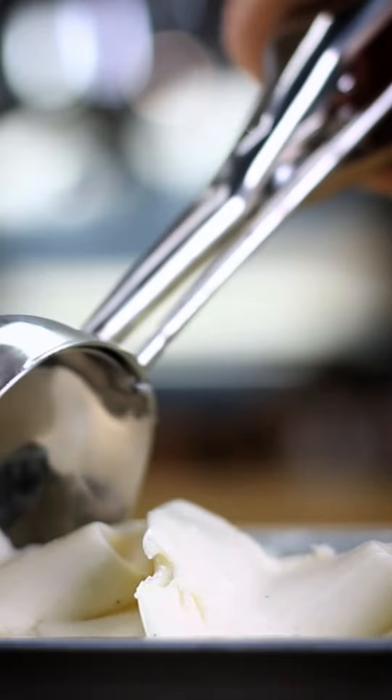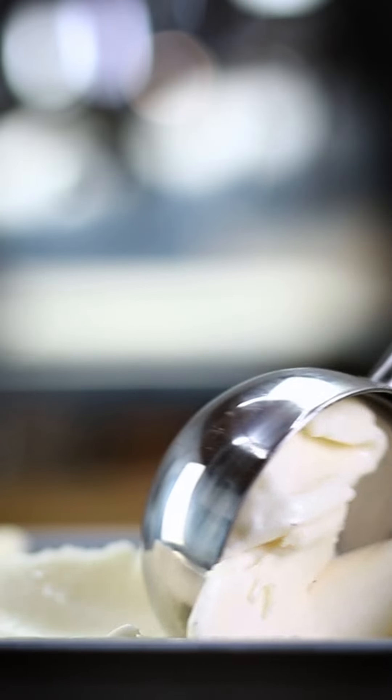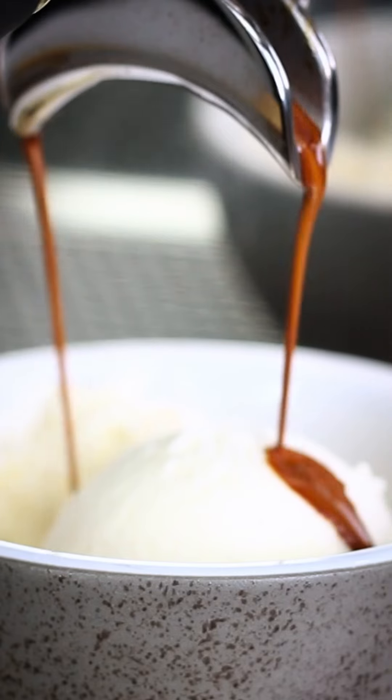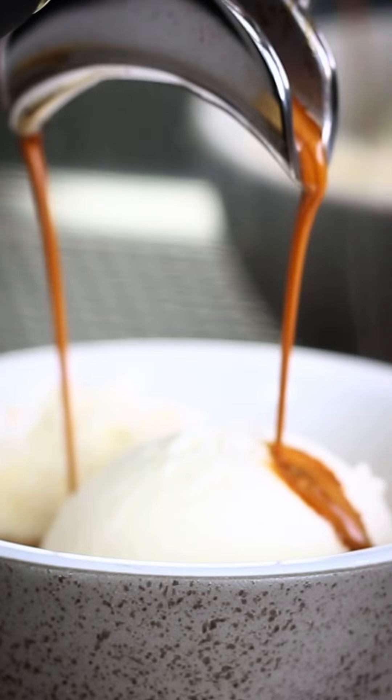And to make an affogato is really simple. You just get a scoop of your favourite gelato or ice cream into a cup, a bowl, a glass, whatever you want, and you make the espresso directly on top. It's as simple as that.